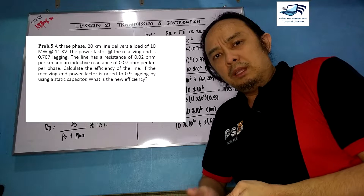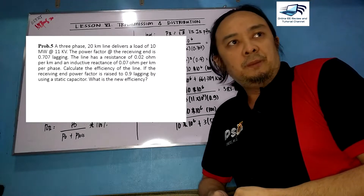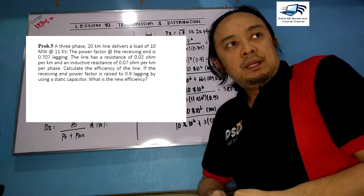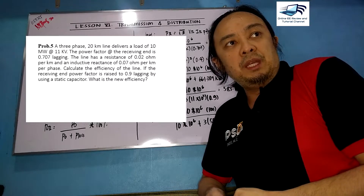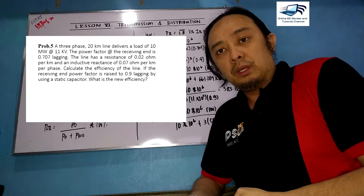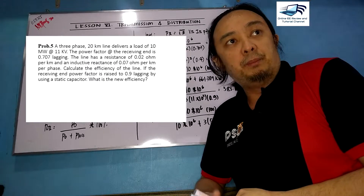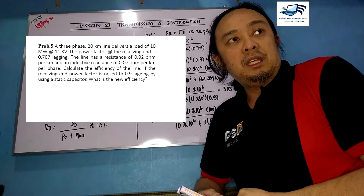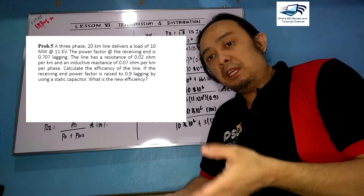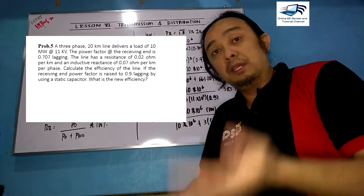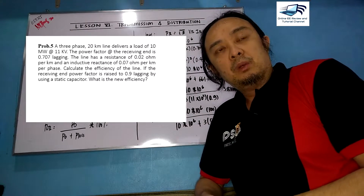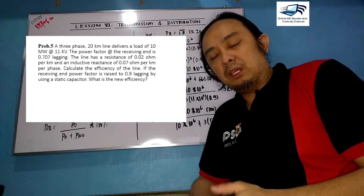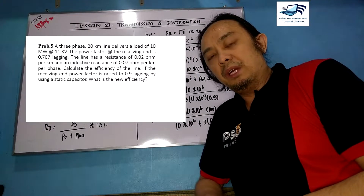We need to calculate the efficiency of the line if the receiving end power factor is raised to 0.9 by a static capacitor condenser. What will be the new efficiency, or the effect of the new power factor?